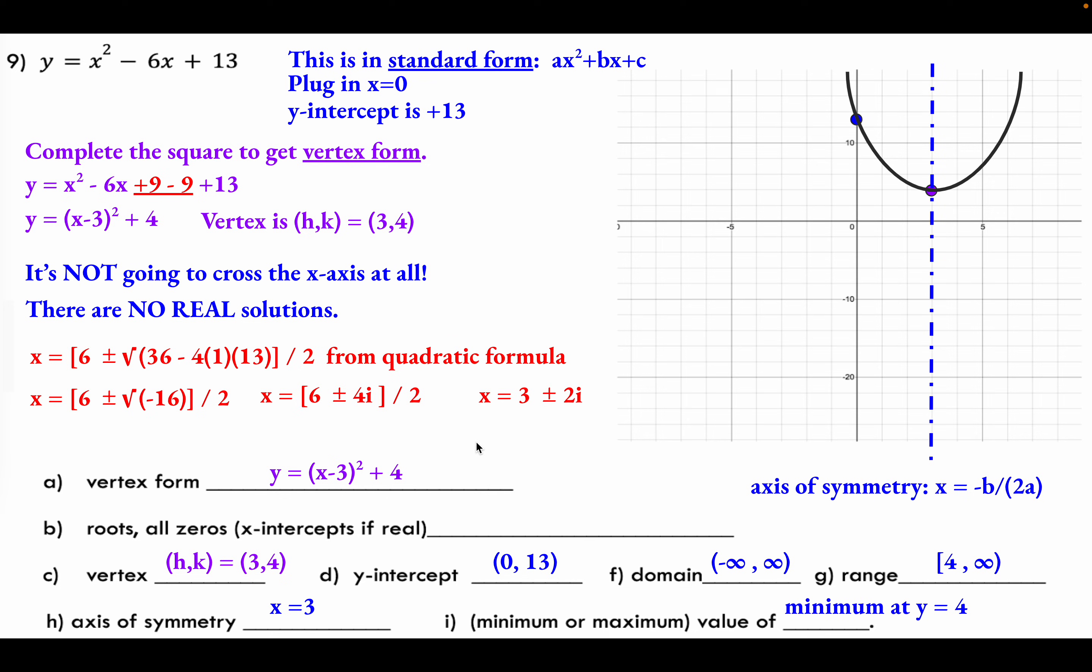And so if we wanted to, it's not asked for here, but if you wanted to put it in factored form, you would have x minus one of the roots, so 3 plus 2i, and x minus the other root or x minus the quantity of 3 minus 2i. So x minus root 1 and x minus root 2. And so then our roots here are going to be 3 plus or minus 2i. And hopefully that helps you to see all these little parts of parabolas and how to write them in different forms.